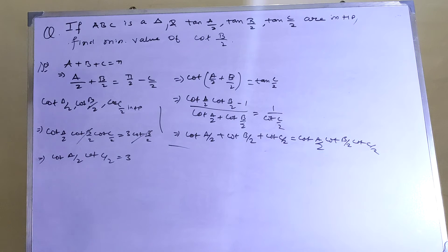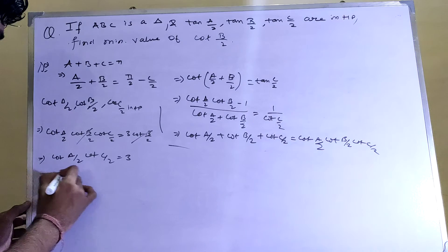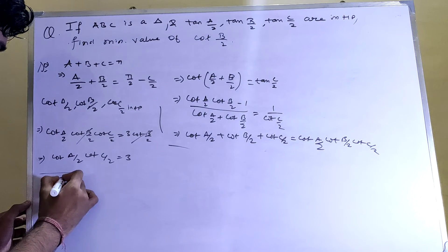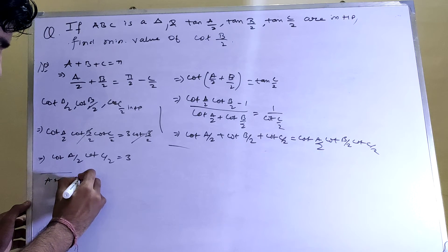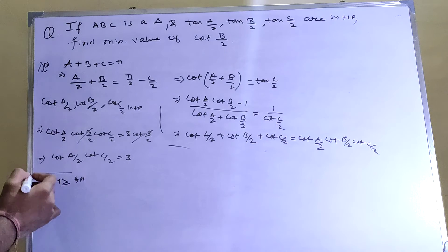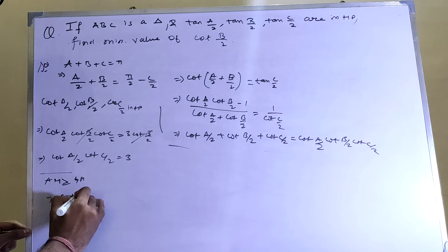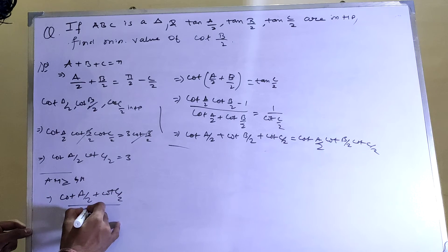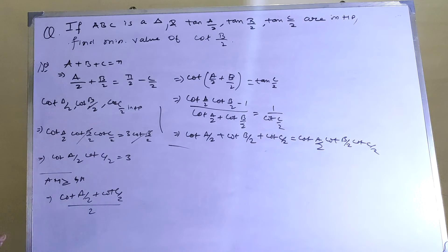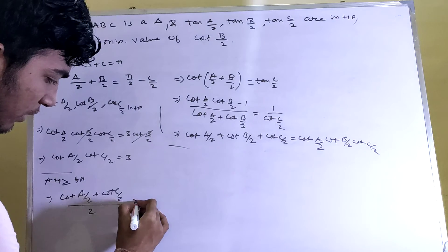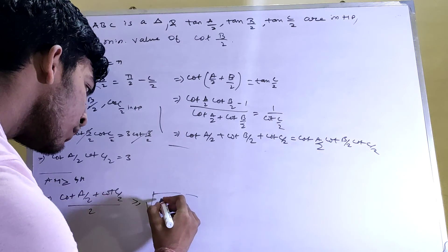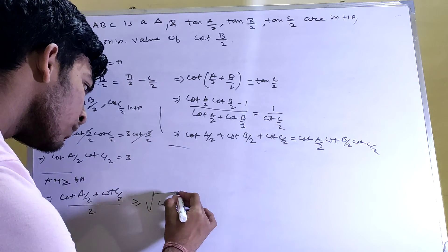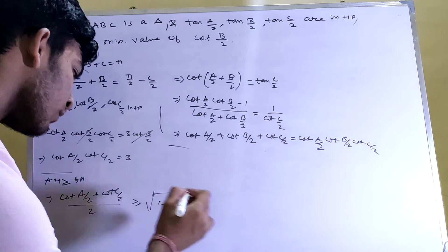We know that AM ≥ GM always holds. Therefore: [cot(A/2) + cot(C/2)] / 2 ≥ √[cot(A/2)·cot(C/2)].